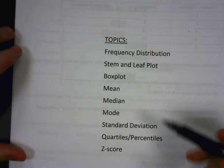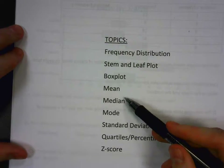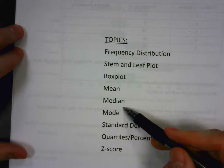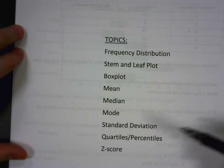We're going to be finding the mean, median, mode, and then some quartiles and percentiles given a frequency distribution and a stem-and-leaf plot.